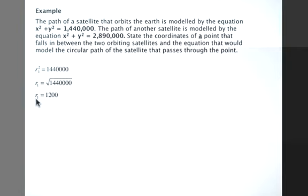So the orbiting radius of the first satellite is 1,200. For the second satellite, R2 squared is 2,890,000, so R2 is just the square root, which is 1,700.